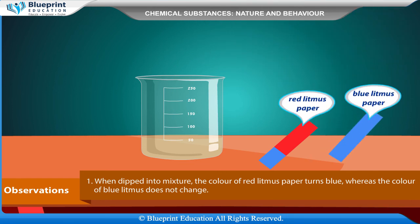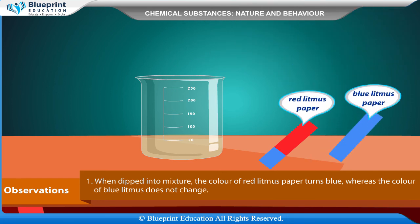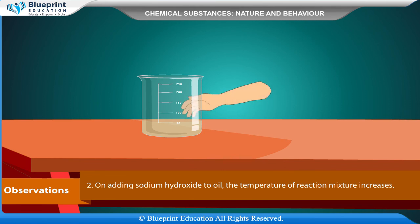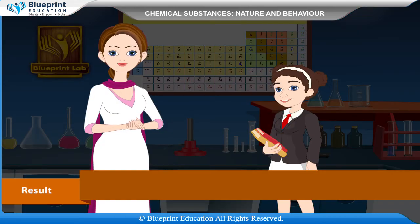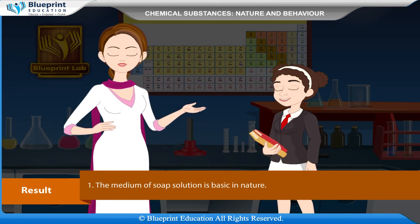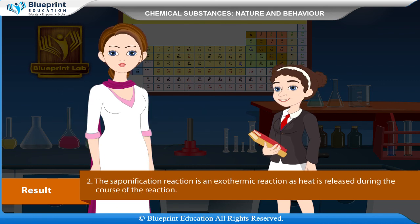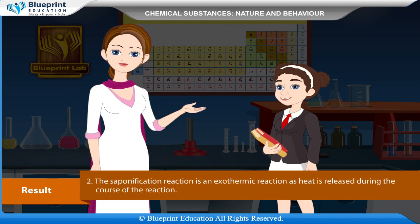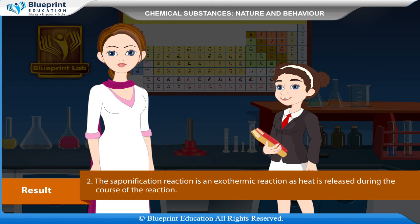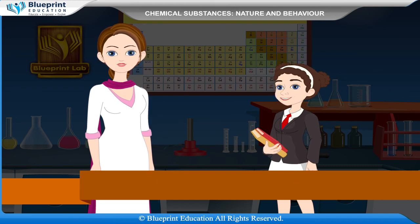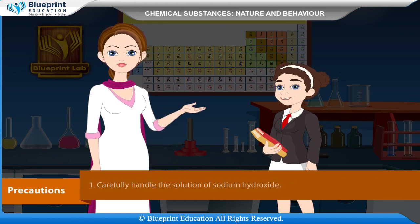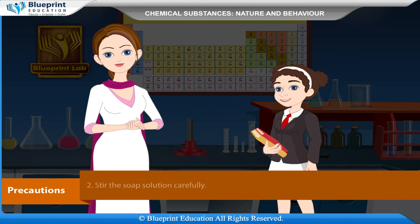Observation: When dipped into the mixture, the color of red litmus paper turns blue, whereas the color of blue litmus does not change. On adding sodium hydroxide to oil, the temperature of the reaction mixture increases. Result: The medium of soap solution is basic in nature. The saponification reaction is exothermic, as heat is released during the course of the reaction.